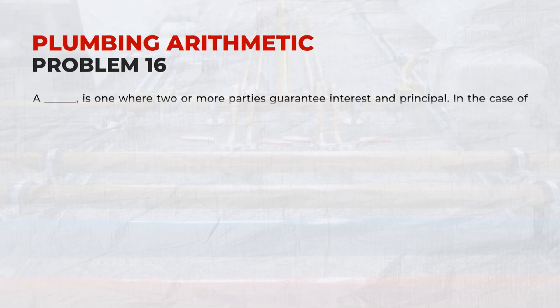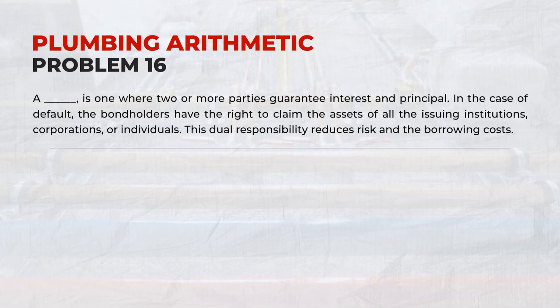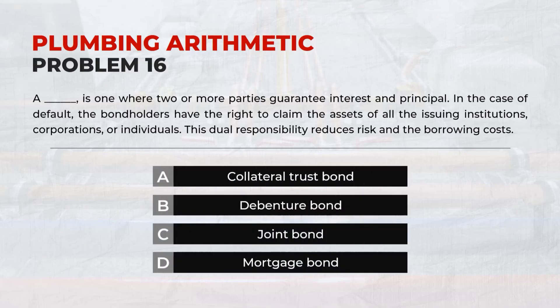A joint bond is one where two or more parties guarantee interest and principal. In the case of default, the bondholders have the right to claim the assets of all the issuing institutions, corporations, or individuals. This dual responsibility reduces risk and borrowing costs. Answer: C. Joint bond.